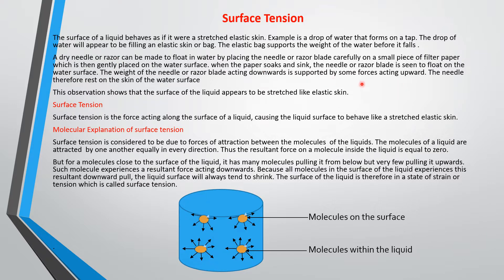Another experience you can observe is that if you go close to a stagnant pool of water, you'll see some insects walking on top of the water. What gives them the ability to walk on the water is that the top of the water appears to be stretched, and because these insects are very light, they can walk on it with ease. This demonstrates that when a water body is undisturbed, its surface is under tension. So what is surface tension?